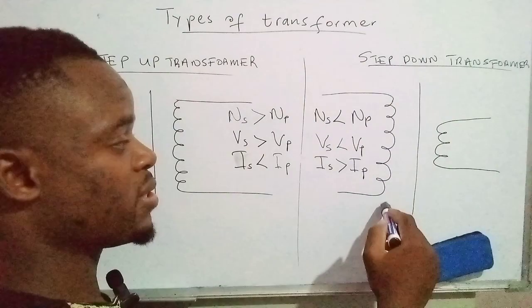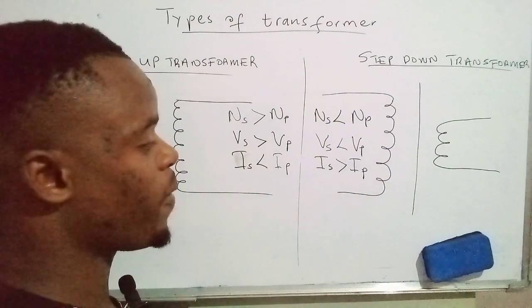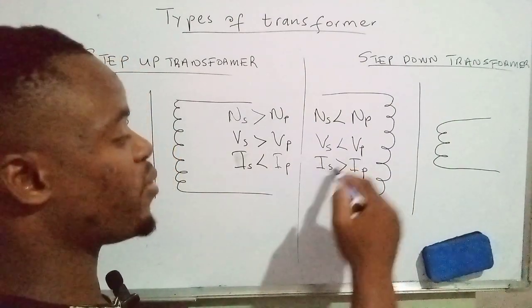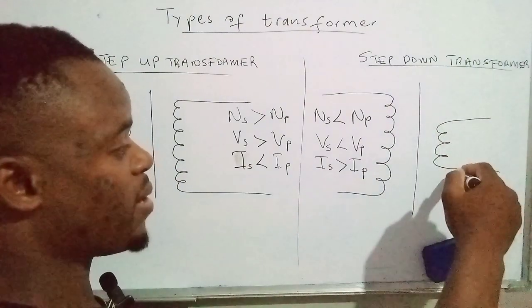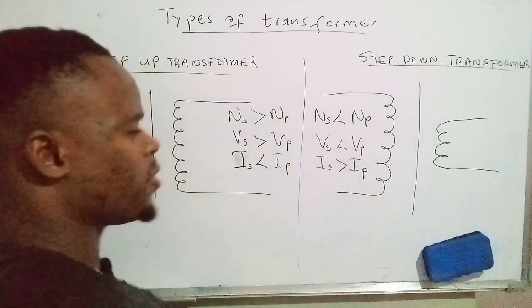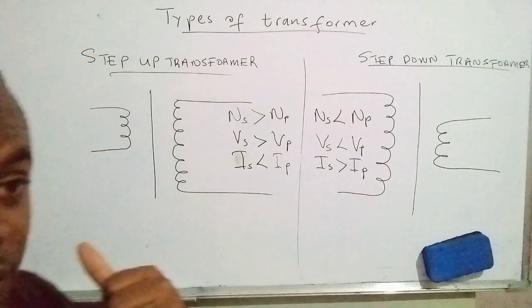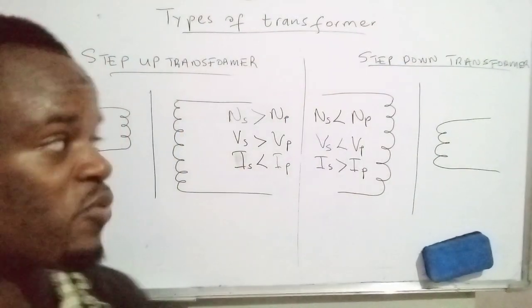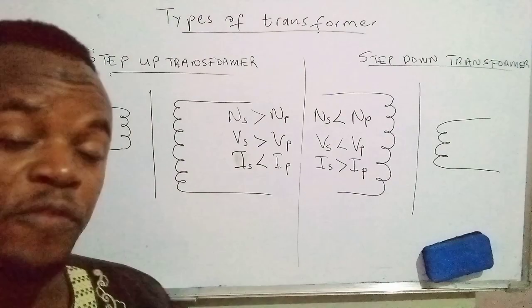than the voltage across the primary coil. Then the current through the secondary coil is greater than the current through the primary coil. So that's all you have to learn about the two types of transformers. If you've liked the